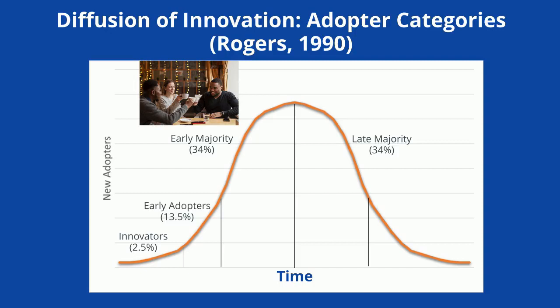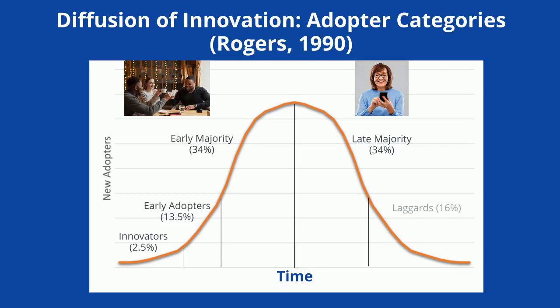The last 16% to adopt are called the laggards. They base their decisions primarily upon past experience rather than influence from the social network, and they must feel certain that a new innovation won't fail before adopting it — like my grandpa and the ATM machine.